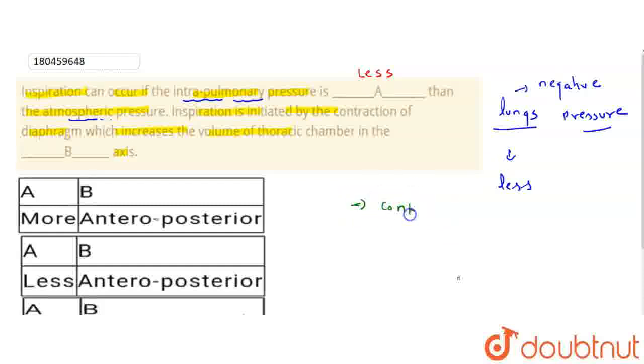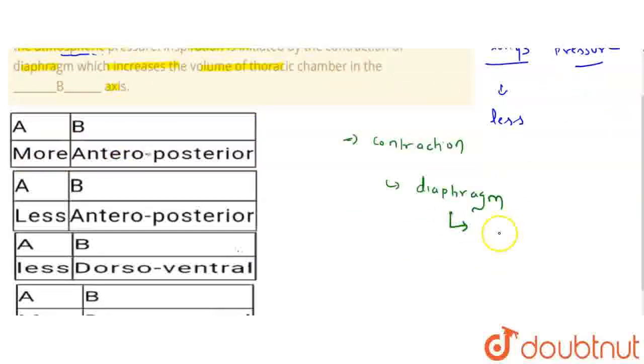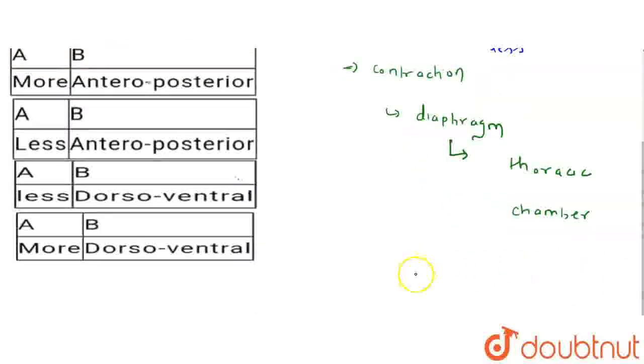It is initiated by the contraction of diaphragm. Diaphragm contraction will increase the thoracic volume, which increases the volume of thoracic chamber